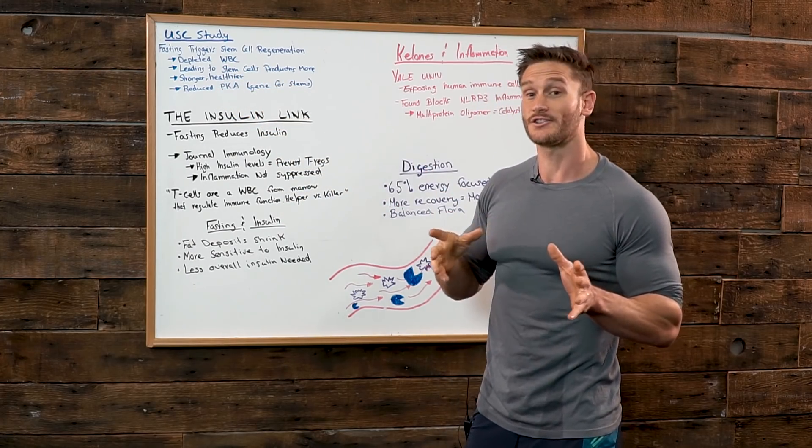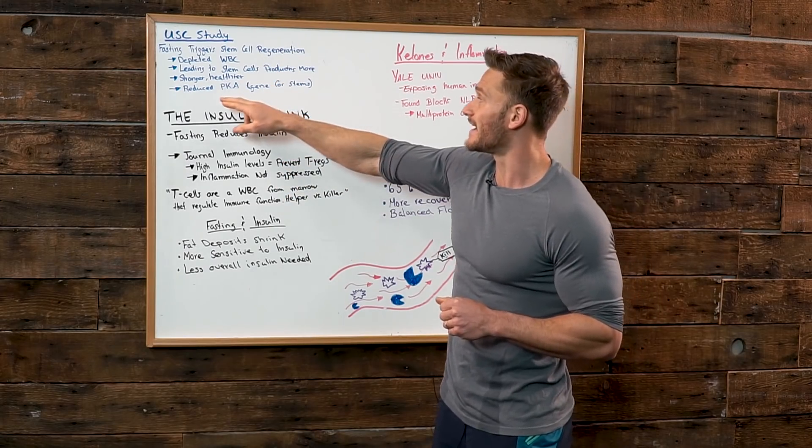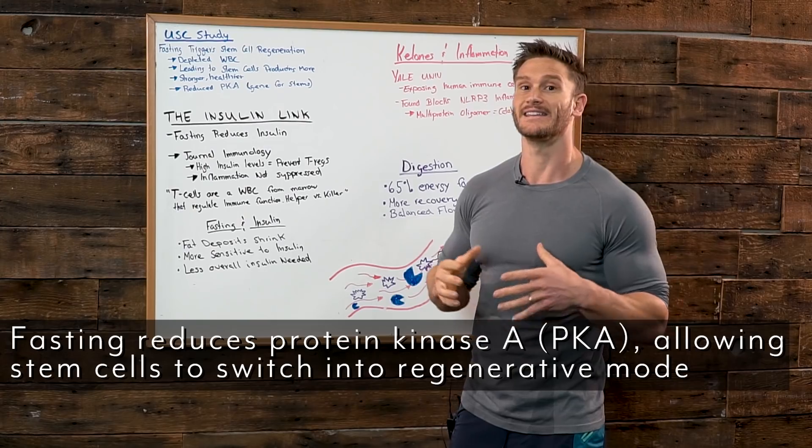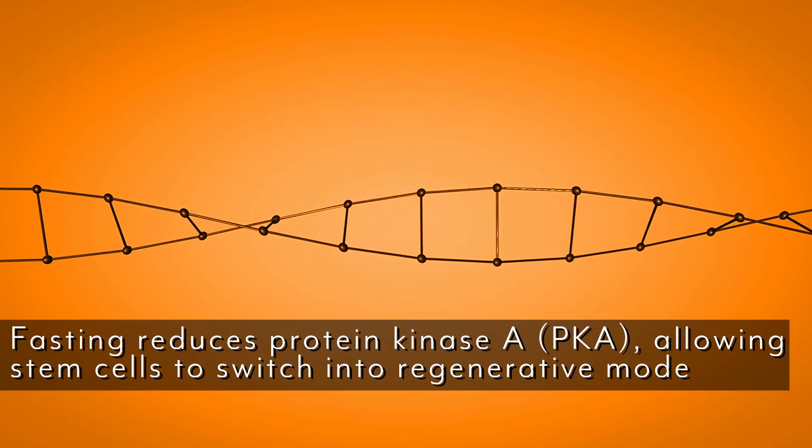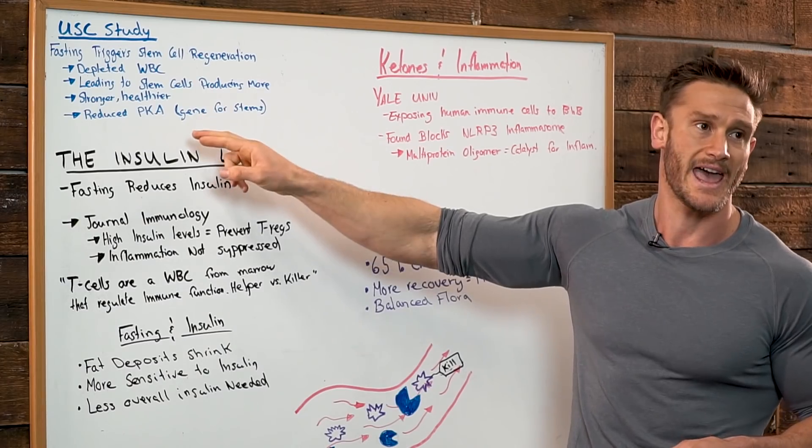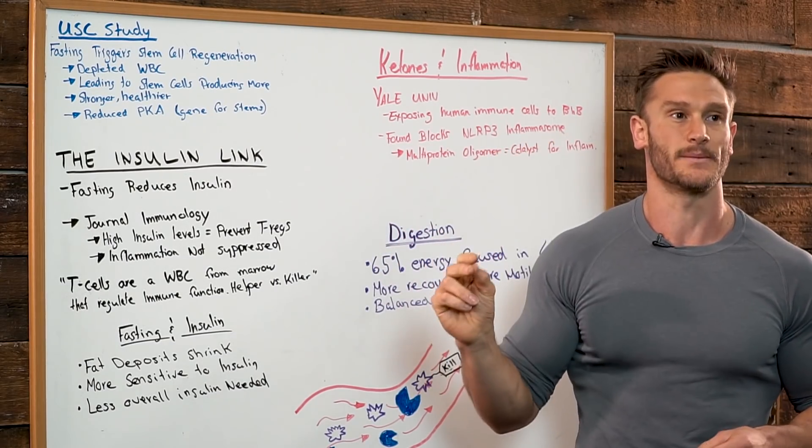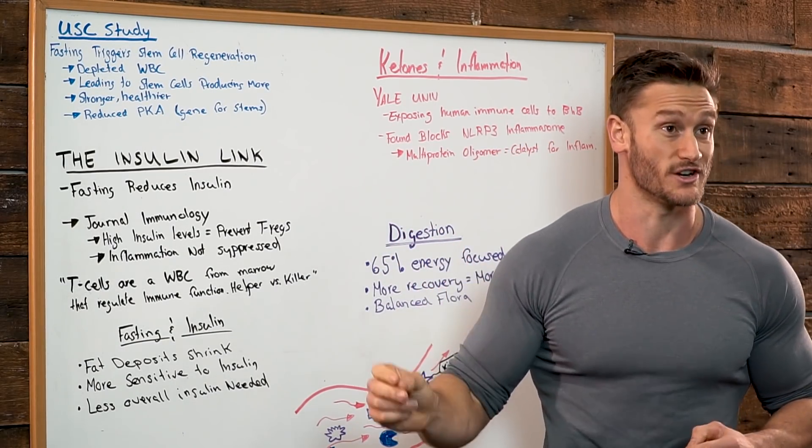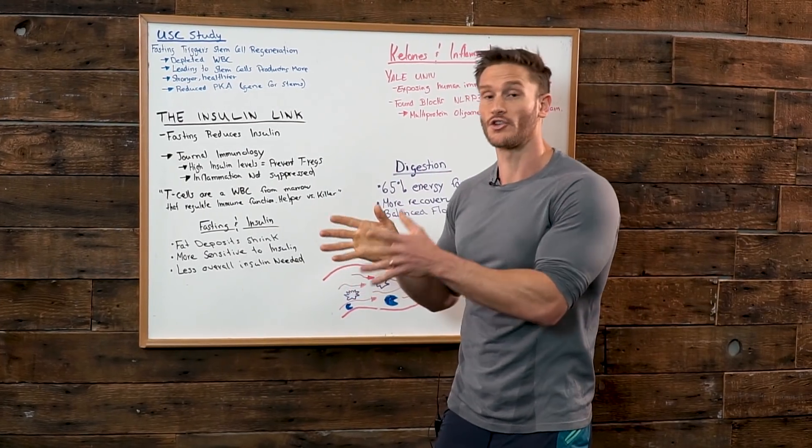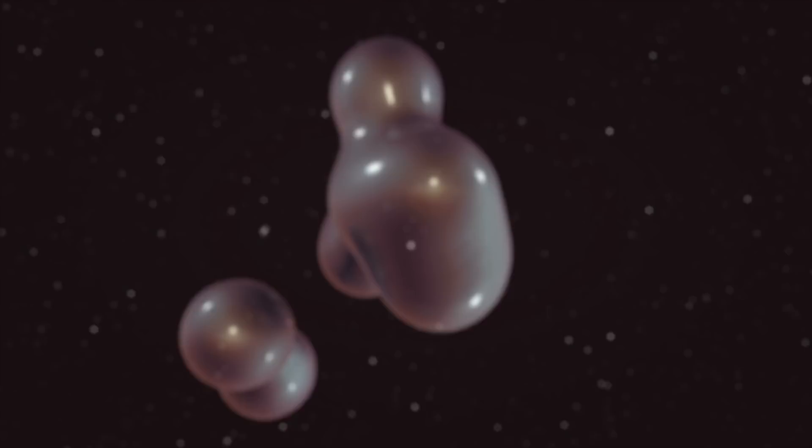Now to add insult to injury in a good way we ended up finding that there was a reduced amount of pKa as well. Now pKa is a gene restriction thing so basically what that means is when you're talking about fasting you're talking about the relationship with the stem cells. If you have lower levels of pKa it means it allows the stem cells to turn on into regeneration mode. The stem cells are now in the position to start creating new cells otherwise they go kind of dormant.